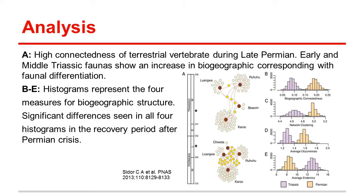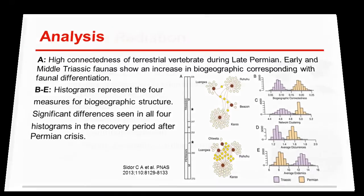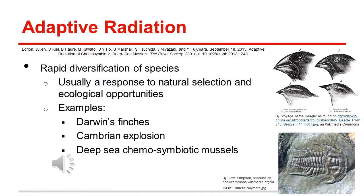Rise of the archosaurs occurred during this period as well. This event is significant because archosaurs are the ancestral group of dinosaurs, crocodilians, and birds. One major topic in macroevolutionary patterns is adaptive radiation, which is the rapid diversification of a species and usually occurs in response to natural selection and other ecological opportunities.